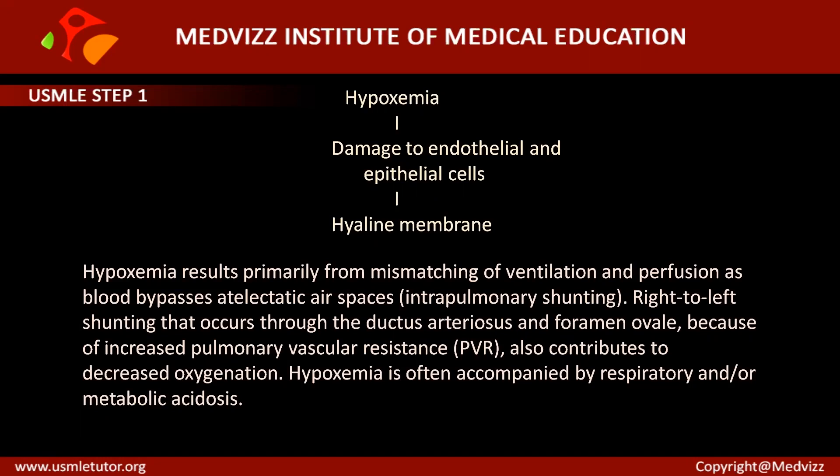Hypoxemia can cause damage to the endothelial cells as well as epithelial cells of the alveoli. This hypoxic state causes damage to the endothelial cells of the pulmonary capillaries and epithelial cells of the alveolus, causing escape of fluid into the interstitium, which again can cause the hyaline membrane.